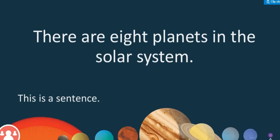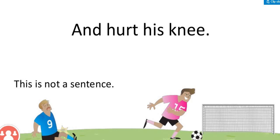But when I look at 'and hurt his knee,' this is definitely not a sentence because I don't know who the subject is. I don't know what you're talking about exactly. There is no meaning. If somebody came to me and said 'and hurt his knee' — who hurt his knee? What was happening? There is no subject, so the sentence isn't complete and it is not a sentence.